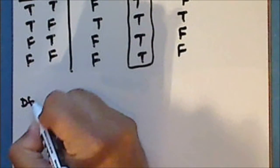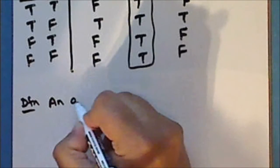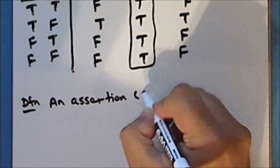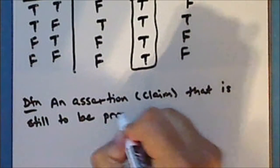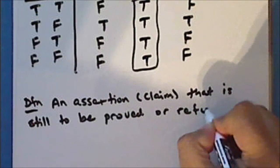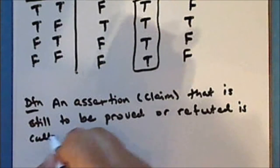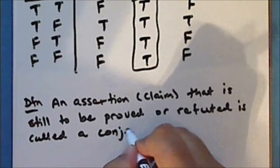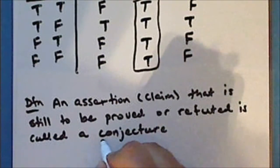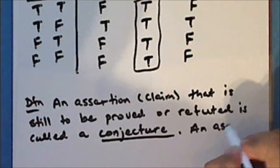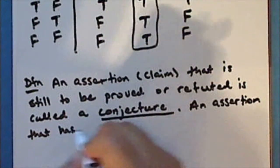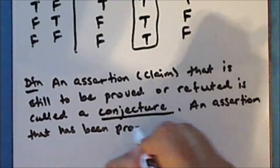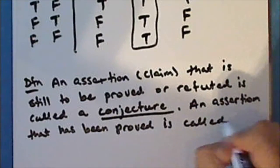So, new definitions: an assertion or claim that is still to be proved or refuted is called a conjecture. An assertion that has been proved is called a theorem.